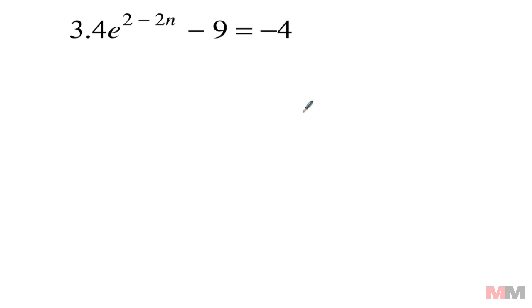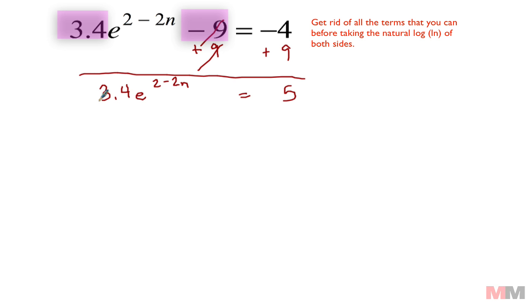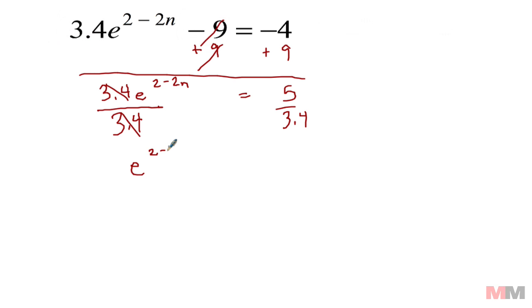All right, last one, I promise. One more example and you're a pro at this. Let's get rid of these two terms and bring it on the other side by doing plus 9 first, so add a 9, and then get rid of 3.4. This is just multiplication right here in front of a constant, I can get rid of that 3.4 by dividing both sides by 3.4. Now I'm left with e to the 2 minus 2n equals - I'm just going to simplify this as a fraction - 25 over 17.